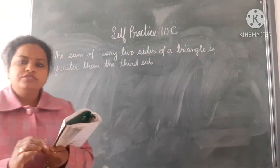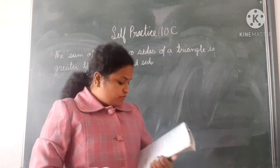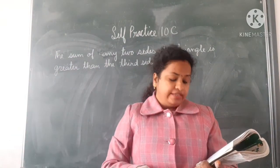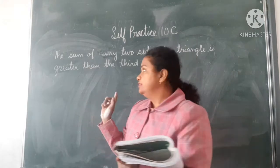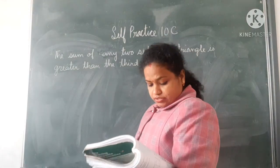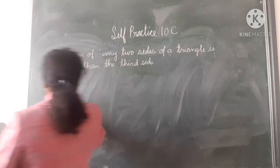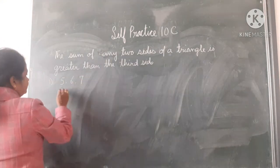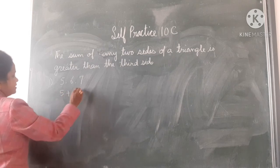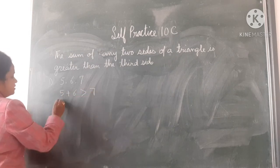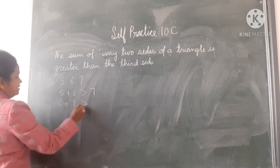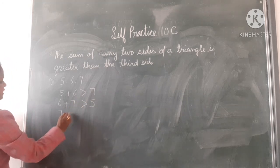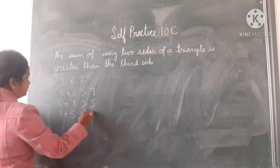Now see. Good morning students. The sum of any two sides of a triangle is greater than the third side. You can see it here. Suppose you are having sides as 5, 6, and 7. If you do 5 plus 6, it is greater than 7. 6 plus 7 is greater than 5, and 7 plus 5 is greater than 6.